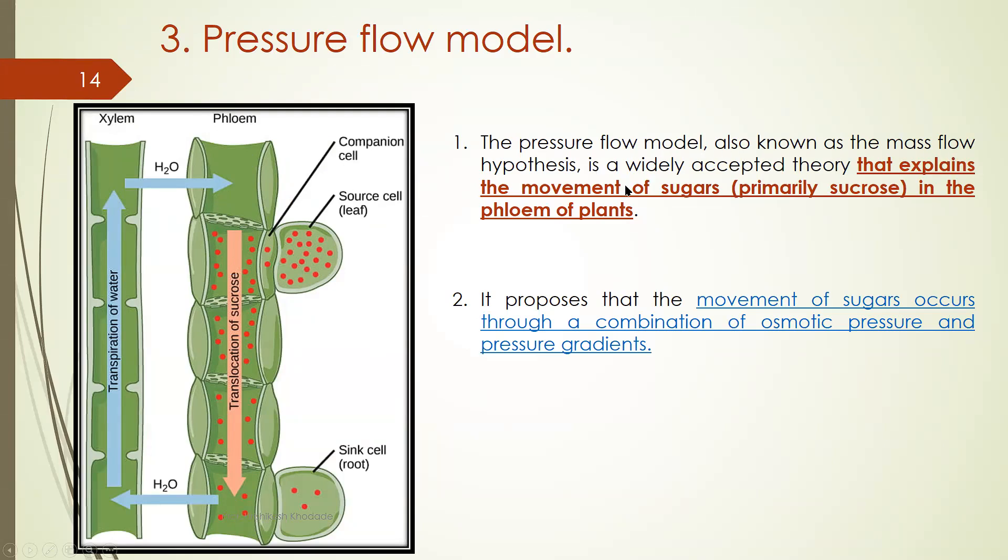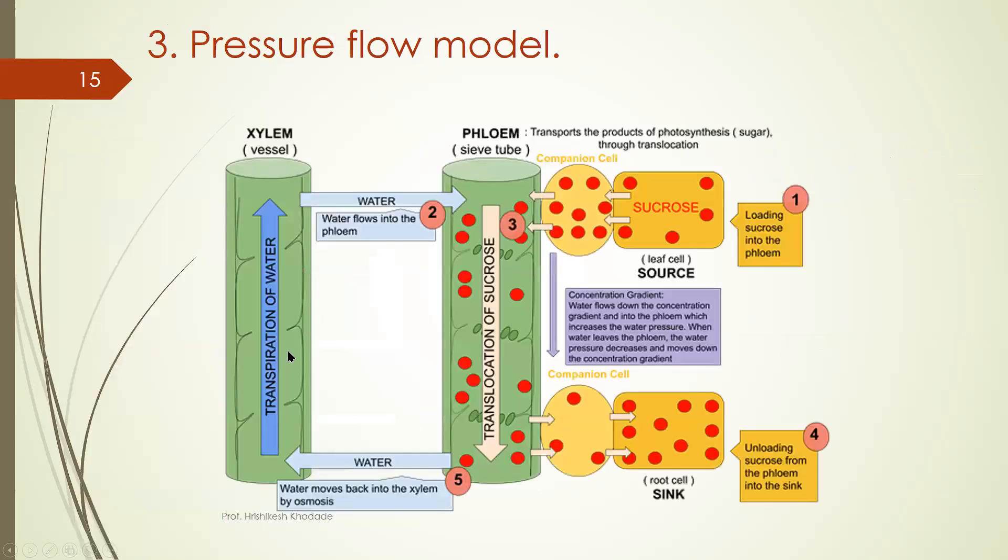So from the leaf which is also considered as source, loading takes place into the sieve tube element through the companion cell. So pressure flow model also known as mass flow hypothesis explains the movement of sugar in the phloem.